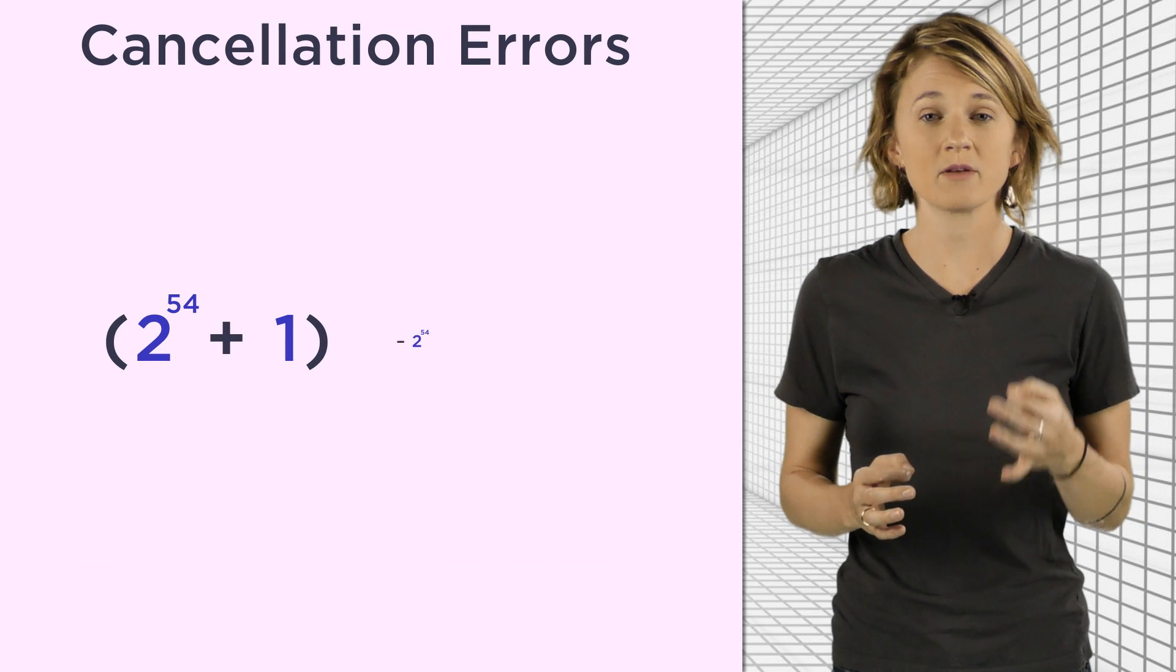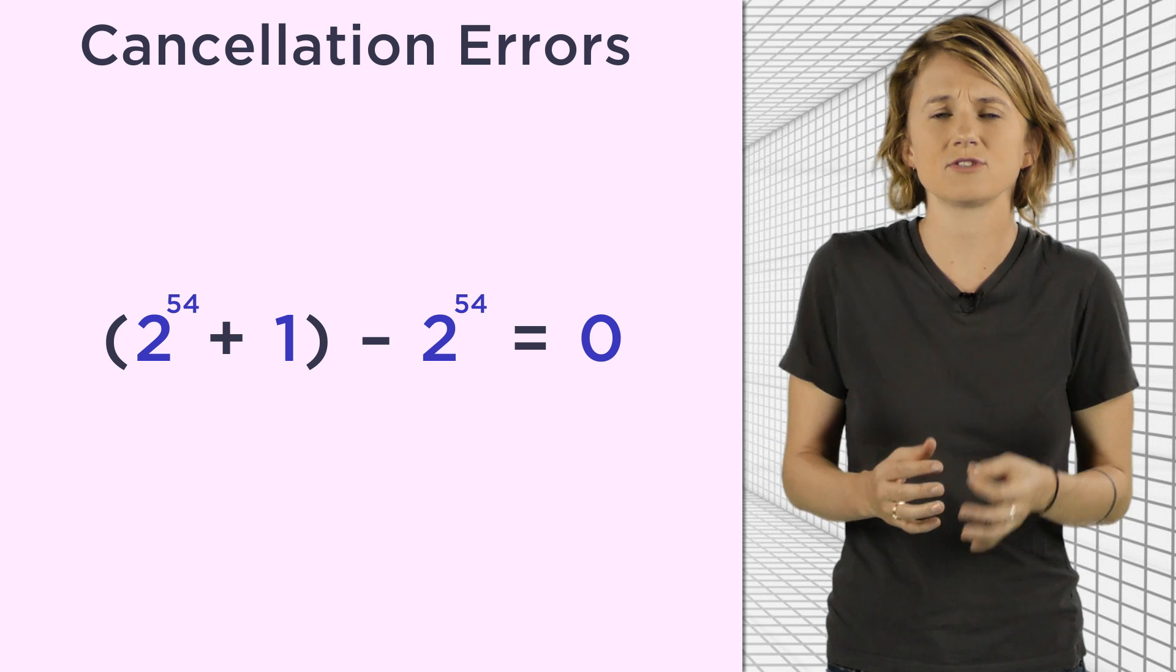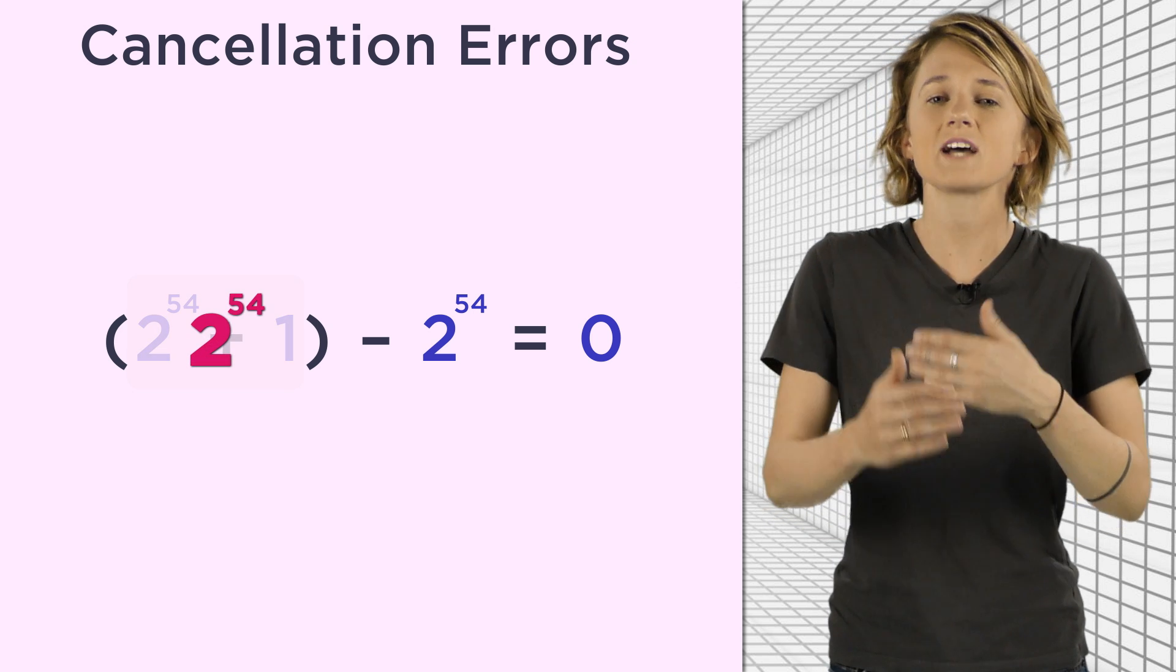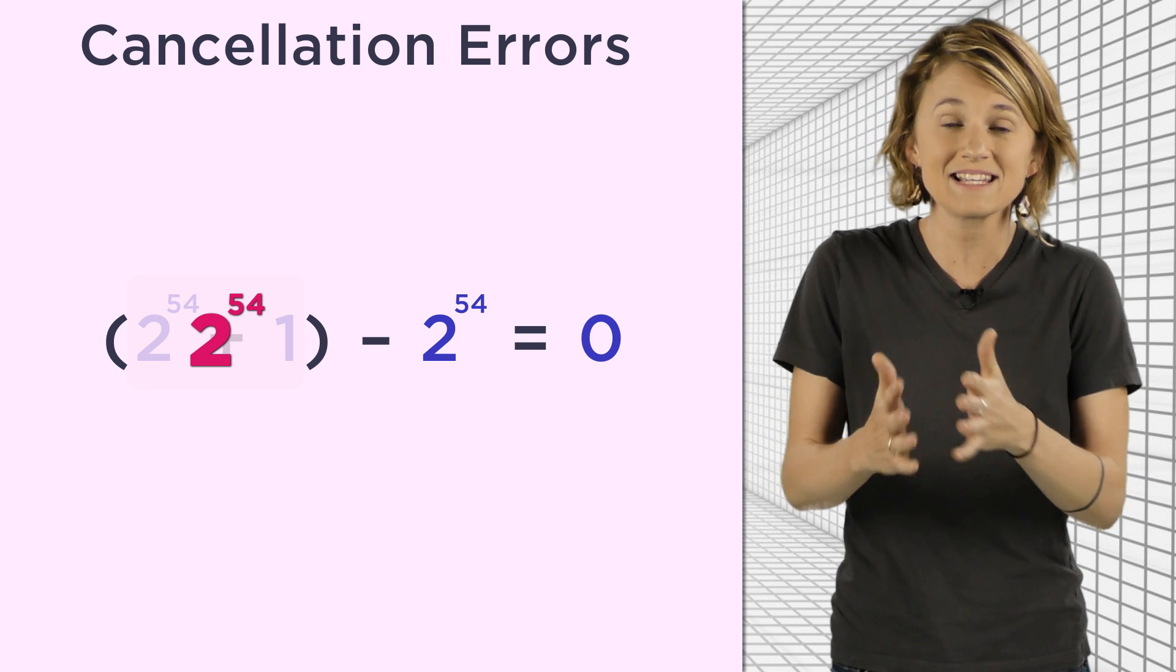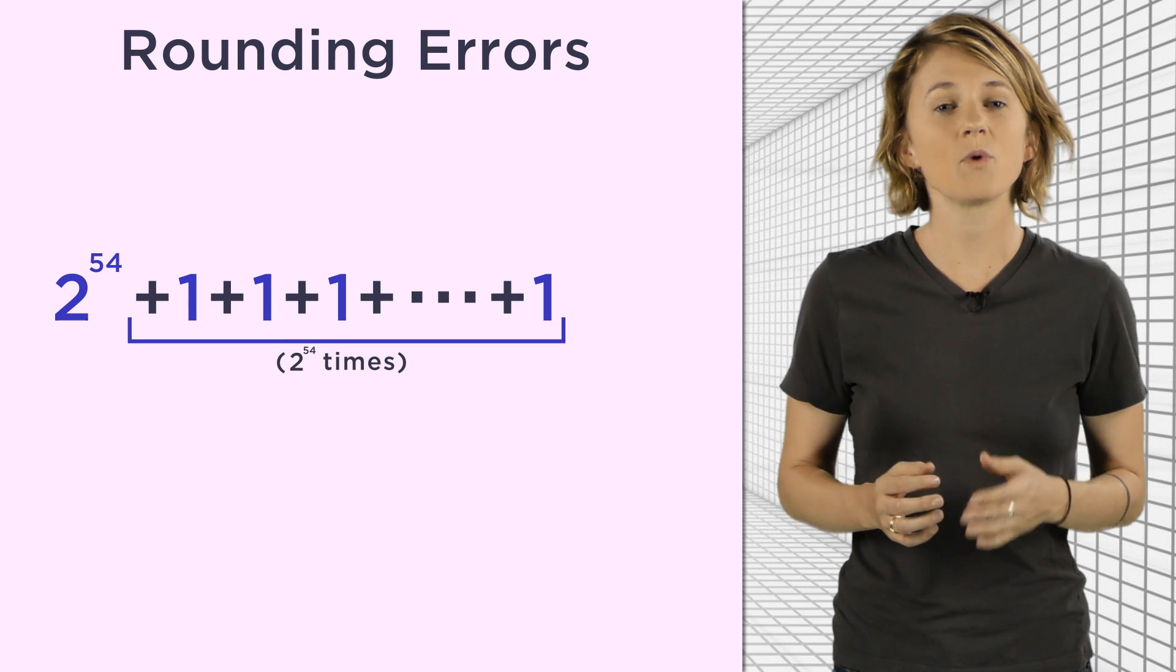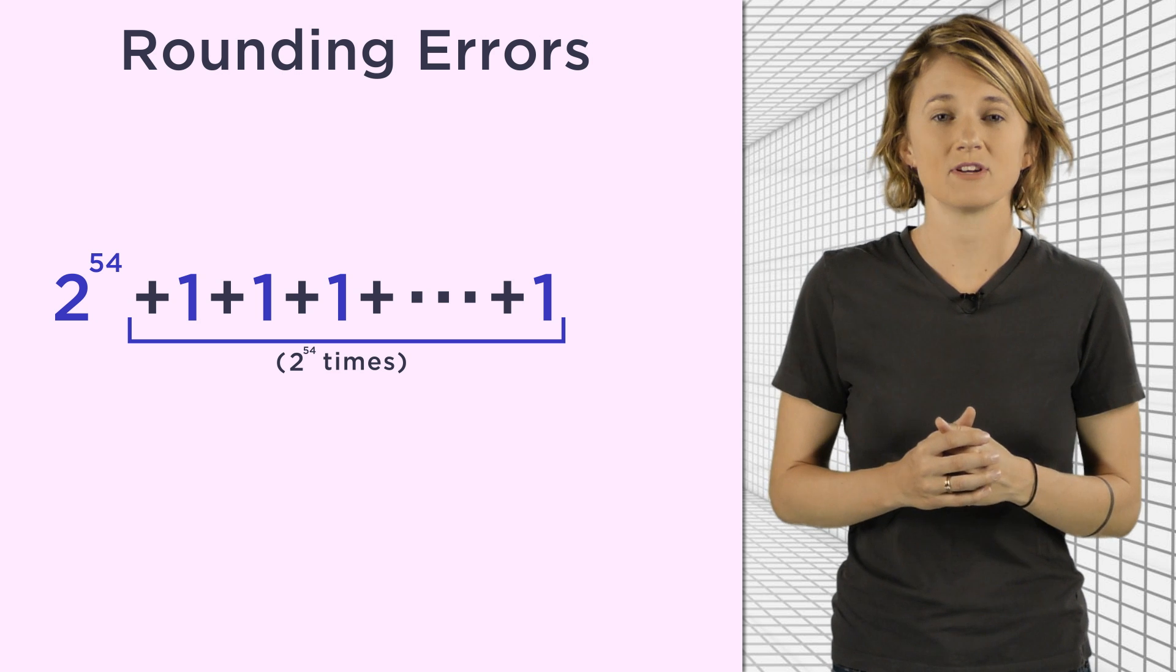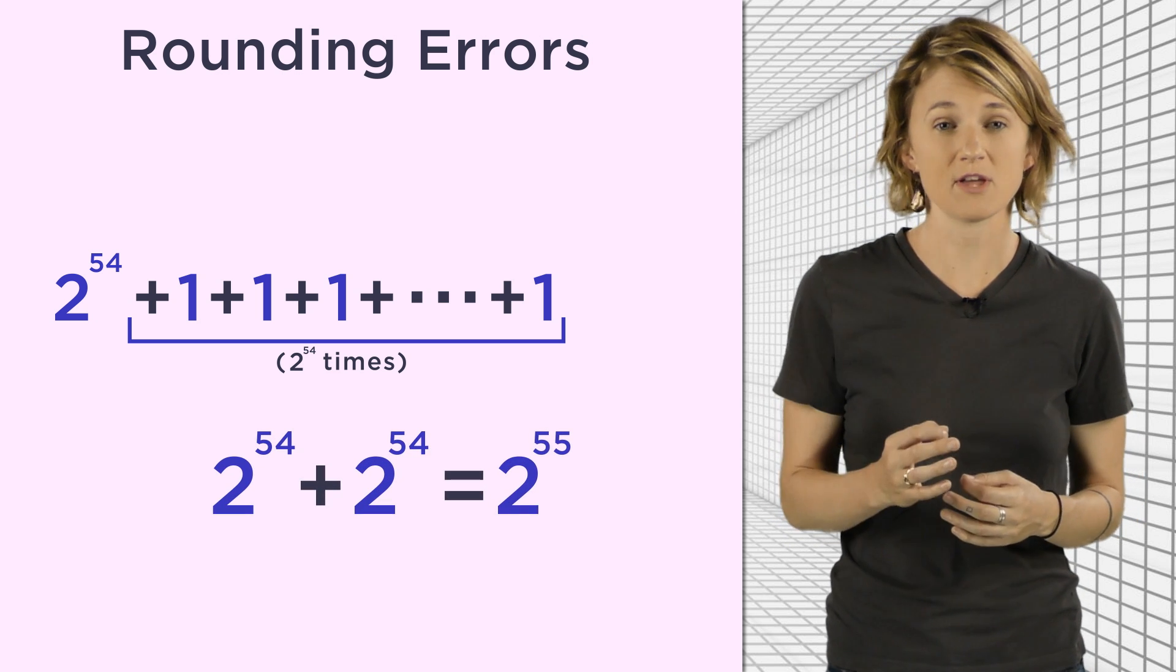Like, 2 to the 54th plus 1 minus 2 to the 54th equals 0, since the computer thinks 2 to the 54th plus 1 is just 2 to the 54th. This constant rounding can cause compounding errors when adding lots of numbers together, like when evaluating this sum where we add 1 together 54 times. The actual answer is 2 to the 54th plus 2 to the 54th, which is 2 to the 55th.